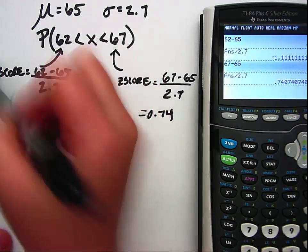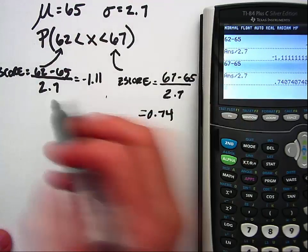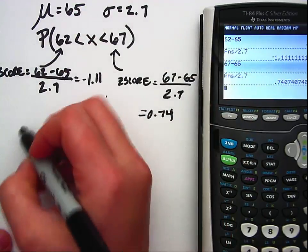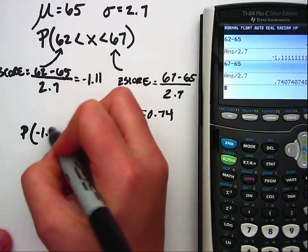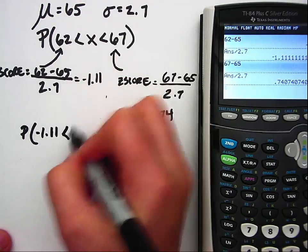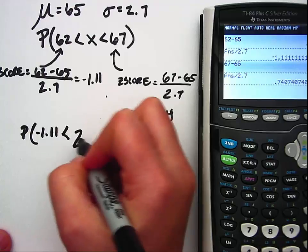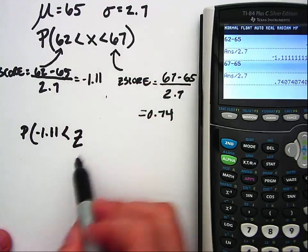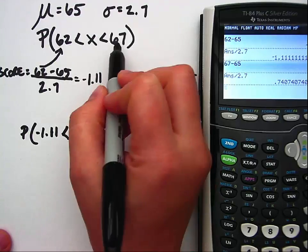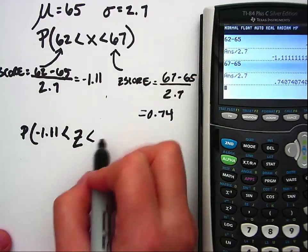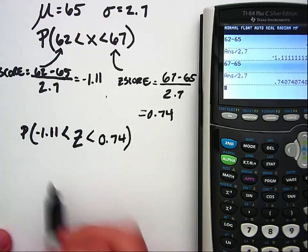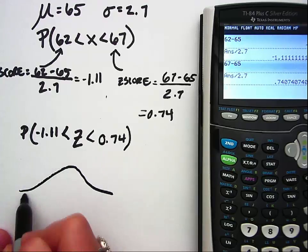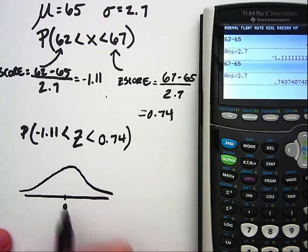So now we can write this probability into standardized values. So 62 is becoming the negative 1.11, we're still less than, but now because we're on standardized values we no longer have x, we have z. And now 67 is no longer 67 but it's 0.74.